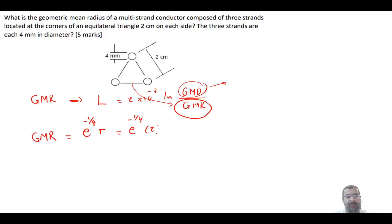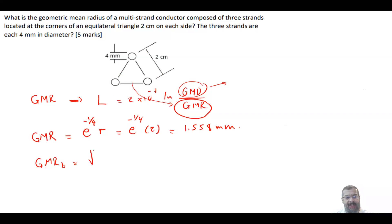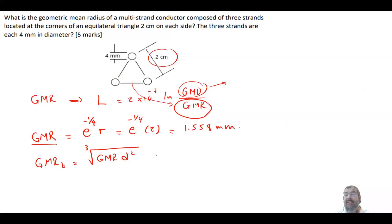So the single-conductor GMR equals e^(−1/4) × 2 mm, giving 1.558 mm. Then for the bundle conductor, the GMR is the cube root of (GMR_single × d²), where d is the distance between conductors in the bundle. This equals the cube root of (1.558 × 20²), giving a total bundle GMR of 8.54 mm.